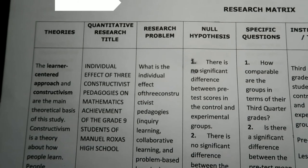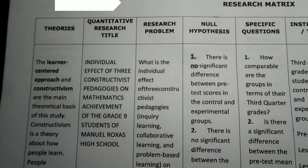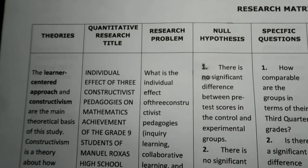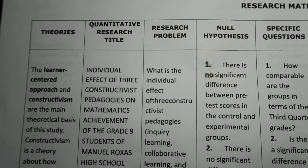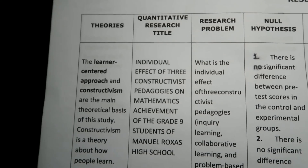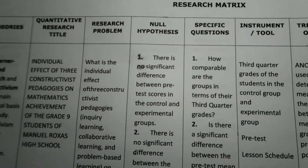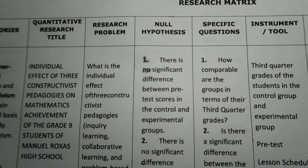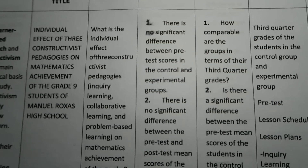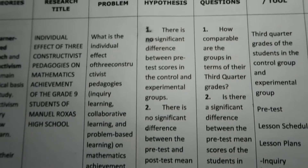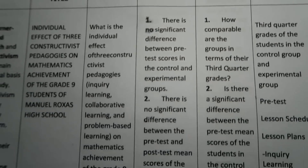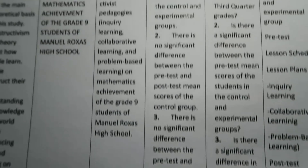The research problem was directly derived from the research title and converted to question form. As you can read: 'What is the individual effect of the three constructivist pedagogies?' — which was lifted directly from the research title. The null hypothesis, as discussed, should be stated in negative form. The null hypotheses stated here are in negative form: 'There is no significant difference… there is no significant difference,' and so on.